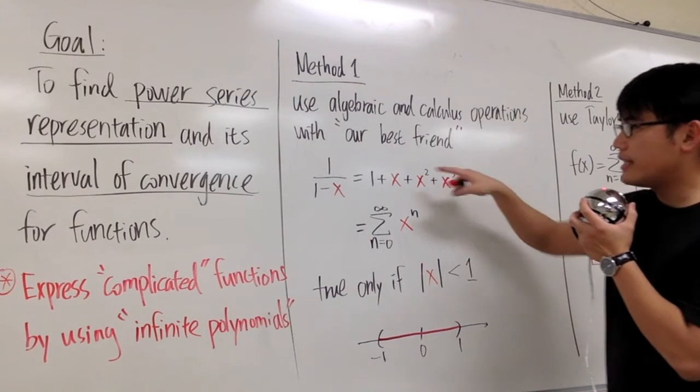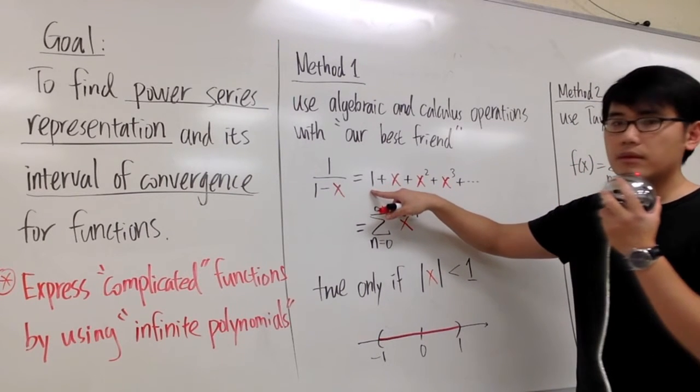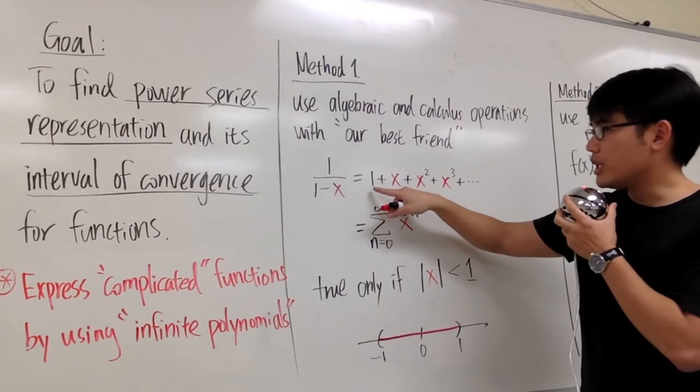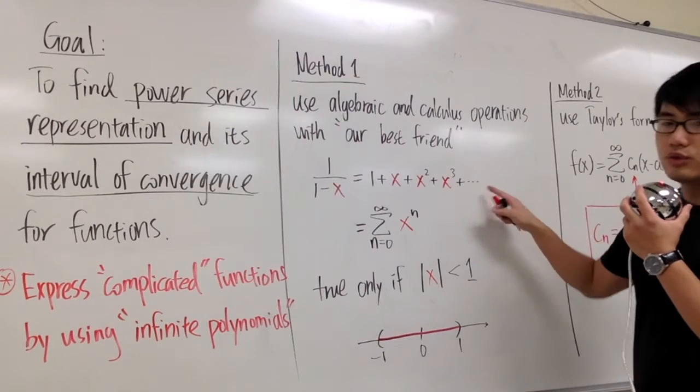And then remember the criteria of being a polynomial. All the powers of x have to be non-negative whole numbers. So here we have x to the 0, here we have x to the 1, x to the 2, x to the 3, and so on forever.